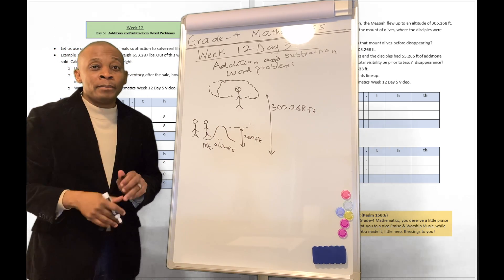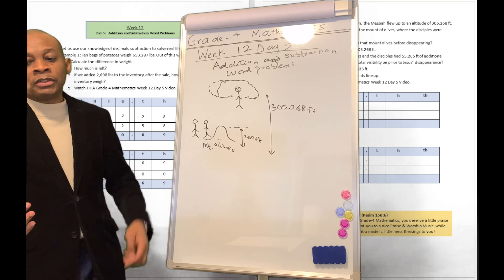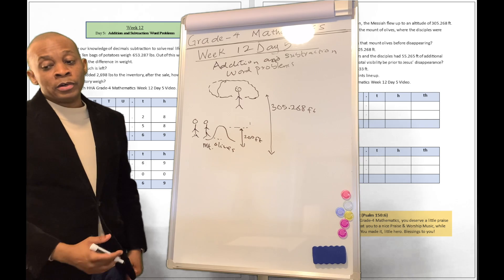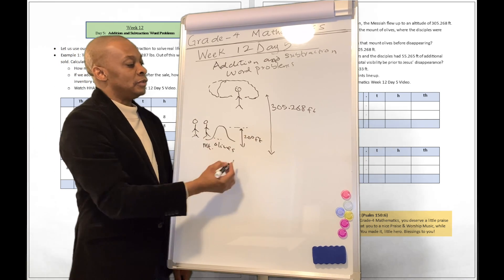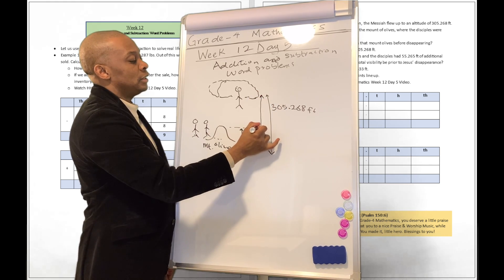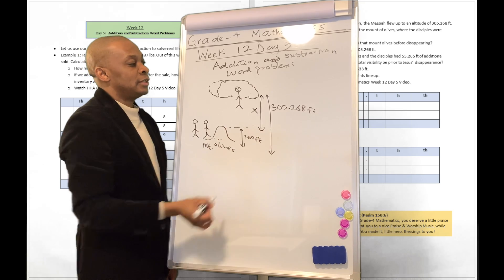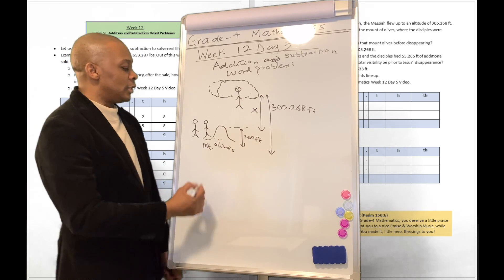So Jesus is getting ready to enter those clouds right now. They can't see him anymore. They're looking on, but they can't see Jesus past this altitude. So the question is, how much higher was Jesus than the Mount of Olives? So guess what? They're telling us to calculate this distance. Okay, so this is the distance X they're telling us to calculate. Well, guess what? That's a subtraction problem. So that's really easy to do.